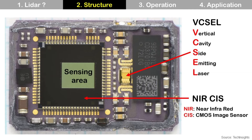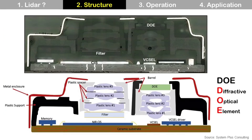So you cannot see the operation of LiDAR with your eyes because it uses infrared light. This is a more detailed cross-section and illustration of LiDAR structure. There are three key elements: pixel, DOE, and CIS. The pixel emits infrared light. This IR travels through lenses and DOE, the diffractive optical element. IR hits the target and is reflected, then enters through lenses and filters at the left, and arrives at CIS, the CMOS image sensor.